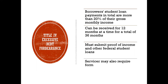There's one other forbearance that a lot of people don't know about — the Title IV excessive debt forbearance. You're eligible for this if your total student loan payments are more than 20% of your gross monthly income. You can get this for 12 months at a time for a total of 36 months per loan, and you do have to submit proof of income. There may or may not be a form — that varies by servicer. This should be an absolute last resort rather than defaulting, for borrowers who have exhausted deferment and forbearance and can't afford a lower payment option.